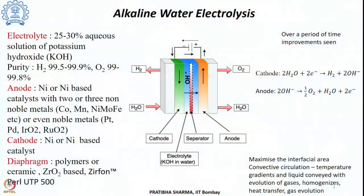Alkaline water electrolysis has seen several advancements and improvements over time — in terms of increased current density, which reduces capital expenditure, and improvements in efficiency, which reduce operating expenditure (OPEX). There have also been improvements in materials, diaphragm material, electrocatalysts, and cell configuration.